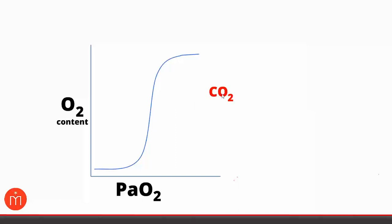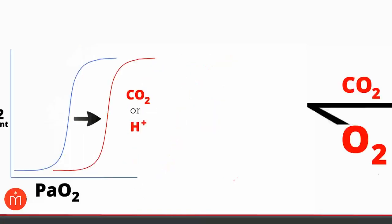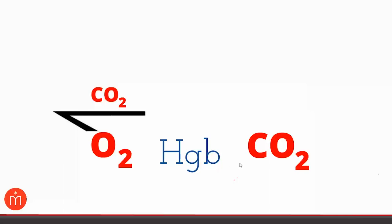CO2 will shift the oxygen dissociation curve to the right, meaning when CO2 is present in high amounts in the red blood cell, it becomes harder for hemoglobin to bind oxygen — lowering oxygen content for a given pO2. It's not just CO2 doing this; H+ also shifts the curve right. Both substances bind hemoglobin and change its affinity for oxygen. Many know this as the Bohr effect, but what matters on the USMLE is understanding how it works, not the name.